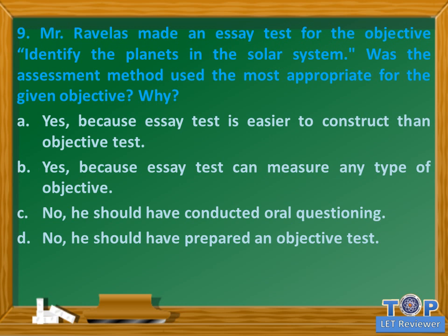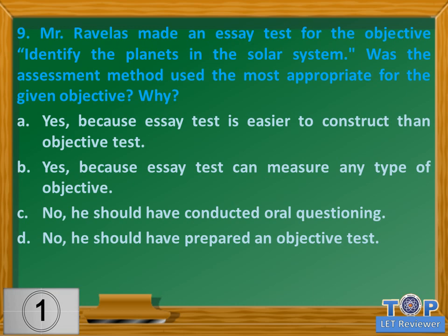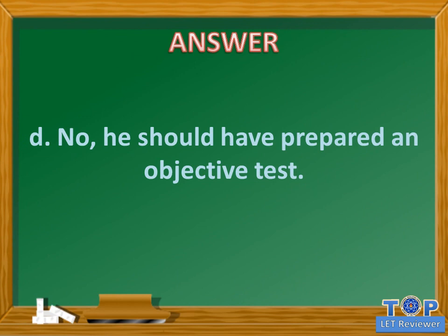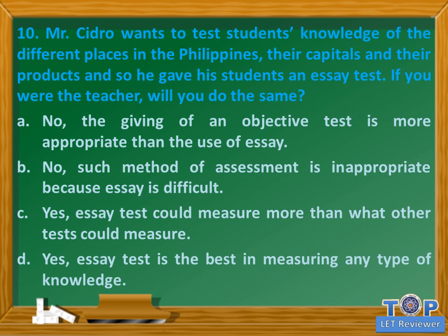Question number nine: Mr. Raffles made an essay test for the objective 'identify the planets in the solar system.' Was the assessment method used the most appropriate for the given objective? A. Yes, because essay test is easier to construct than objective test, B. Yes, because essay test can measure any type of objective, C. No, he should have conducted oral questioning, D. No, he should have prepared an objective test. Answer: D. No, he should have prepared an objective test.